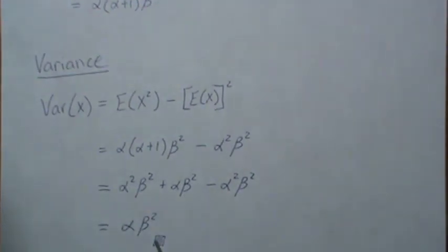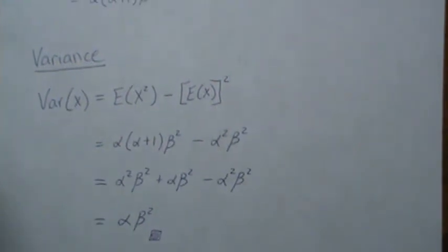Leaving just alpha times beta squared, and that's the variance of a gamma function. That's all I have for today. Hope you enjoyed it, please like the video if you did and subscribe so you don't miss the next one. Thanks, bye.